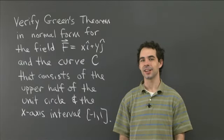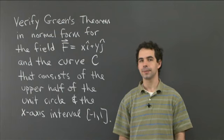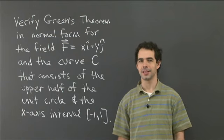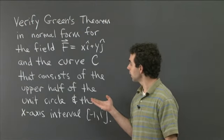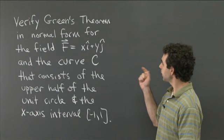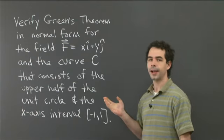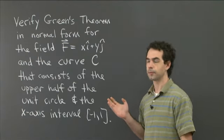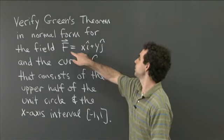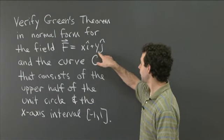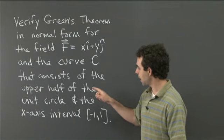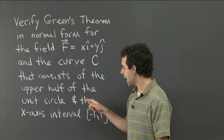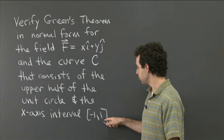Welcome back to recitation. In lecture, you've been learning about two-dimensional flux and the normal form of Green's theorem — normal here meaning perpendicular. I want to give you a problem about that. What I'd like you to do is verify Green's theorem in normal form for the field F equals x i-hat plus y j-hat, and the curve C that consists of the upper half of the unit circle and the x-axis interval from minus 1 to 1.